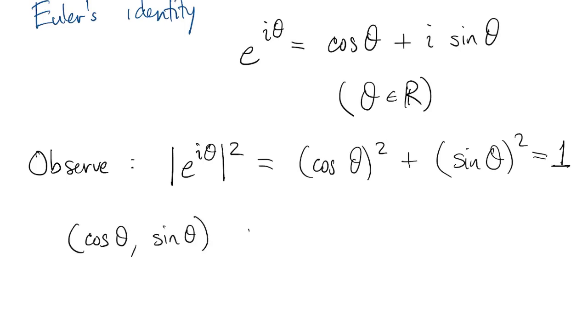So e to the iθ always has a unit modulus or a unit magnitude. More specifically, cosine θ, sine θ, the real and imaginary parts, are the coordinates of a point at the angle θ on the circle of radius 1, what we call the unit circle.